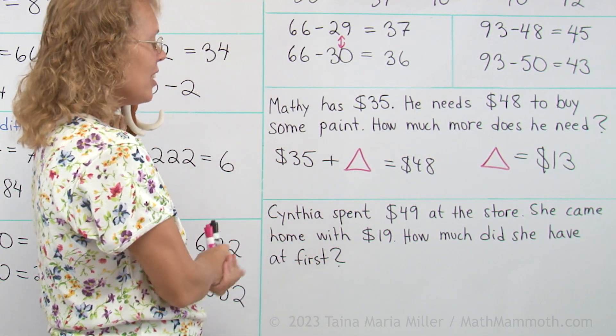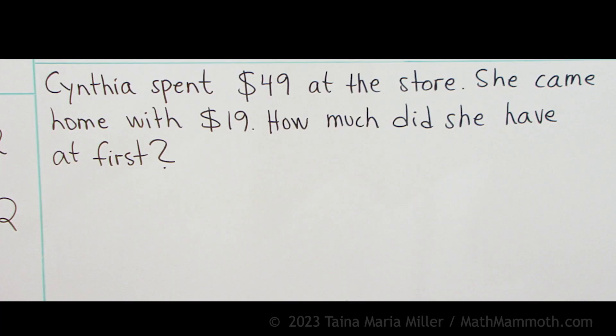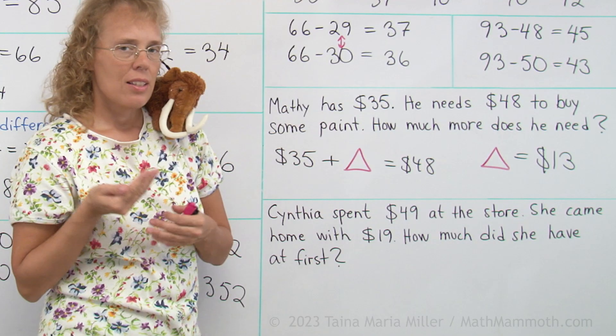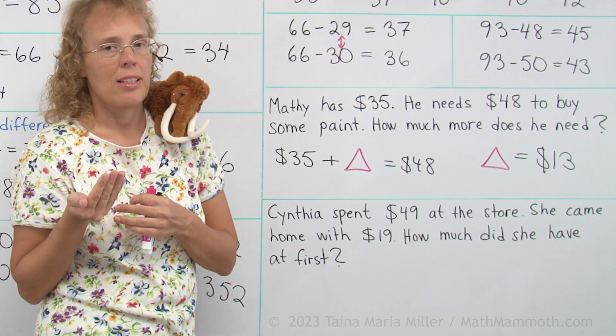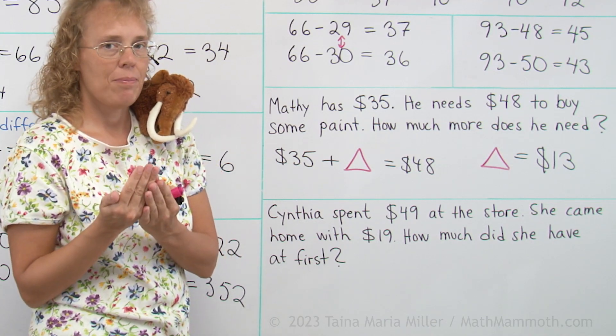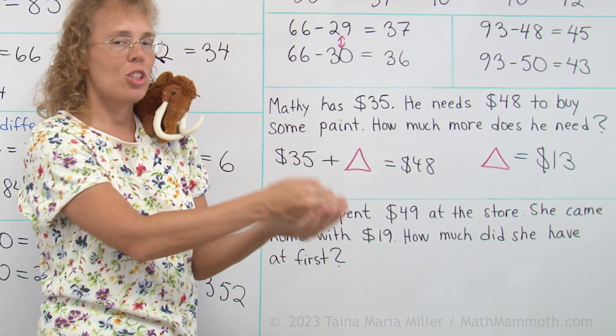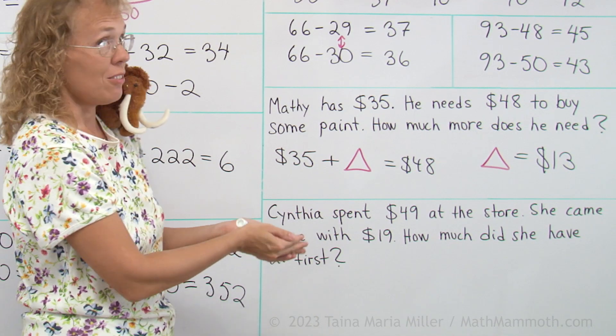Cynthia spent $49 at the store and she came home with $19. How much did she have at first? Think of her purse where she keeps her money. She has some money at first. She goes to the store and spends $49.